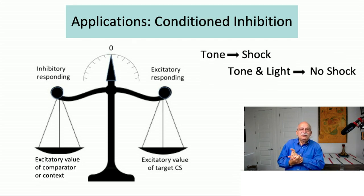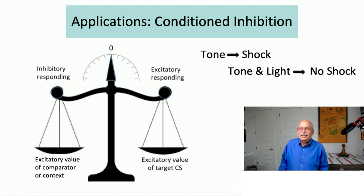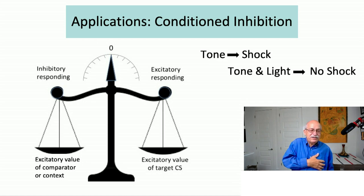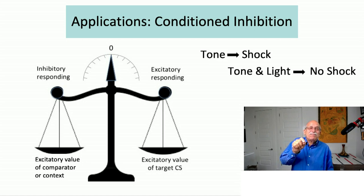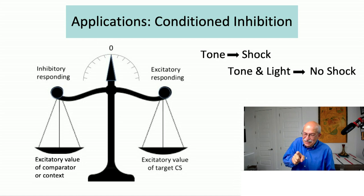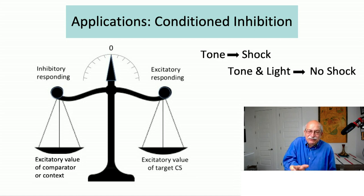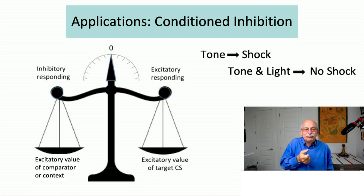The next example illustrates how the Comparator Hypothesis handles conditioned inhibition. In an inhibitory conditioning procedure, you have two kinds of trials: a tone paired with shock — making the tone a strongly conditioned excitatory stimulus — and then other trials where the tone and a light are presented together with no shock. So the light is being trained in the context of the tone. If you're interested in conditioned inhibition, you're interested in inhibitory responding developing to the light.